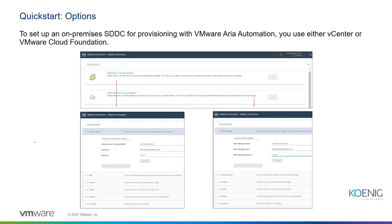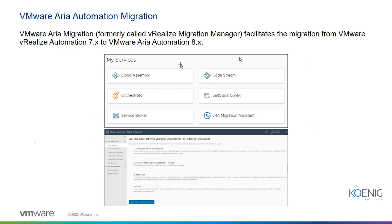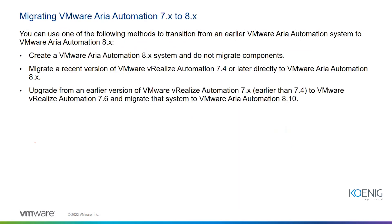When migrating ARIA Automation, you can update ARIA Automation 7.x and migrate to 8.x. Several types of vRealize Automation 8.x system objects are transformed with many new features when migrated to ARIA Automation 8.x. The Easy Installer provides support for this migration as well. Aria Automation 8.x components can also be migrated from a recent version of ARIA Automation 8.x.